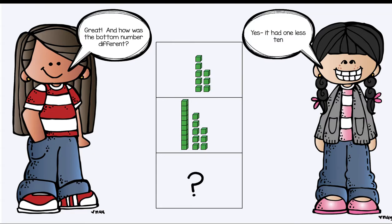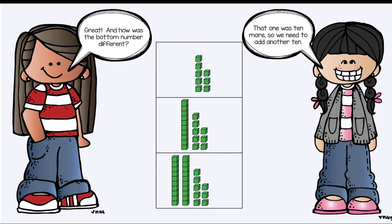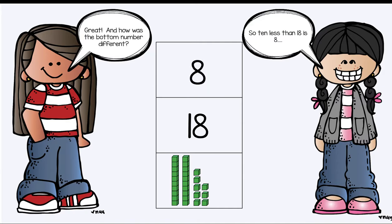And how was the bottom number different? Hmm. Let's think scholars. How was the bottom number different? That one was 10 more. So we need to add another 10. Great. So 10 less than 18 is 8 and 10 more than 18 is, read that bottom number friends, 28. Great job.